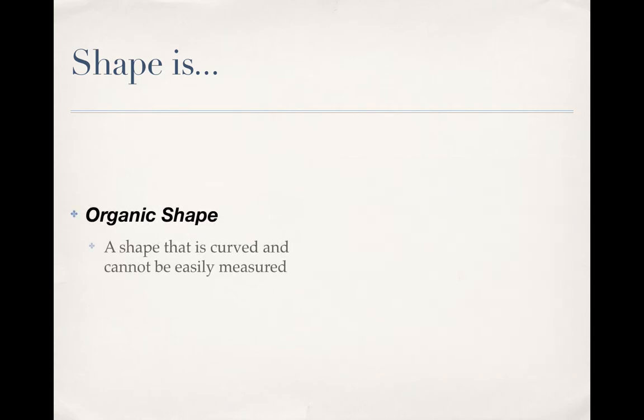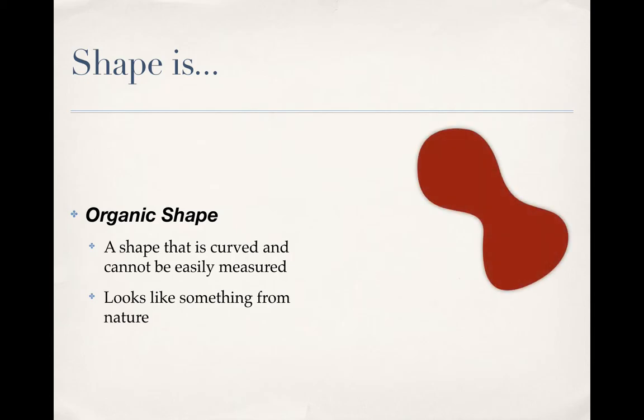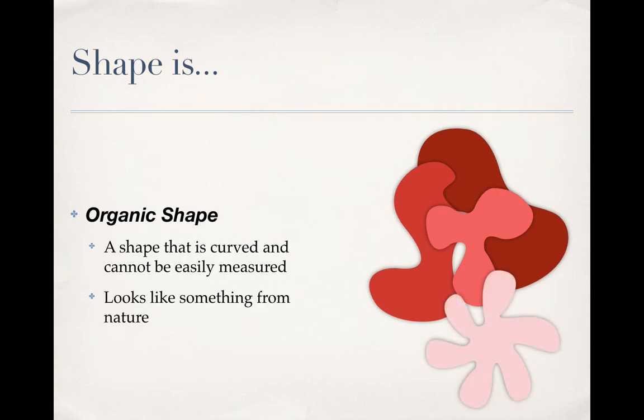The second type of shape that we talk about are organic shapes. These are shapes that are curved. They can't easily be measured. They look like something from nature. If you tried to describe it blob or curvy would be words you used to describe that.